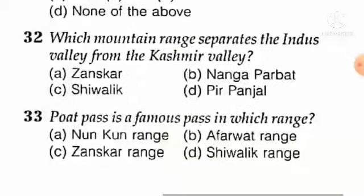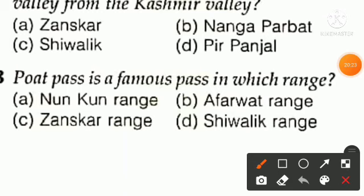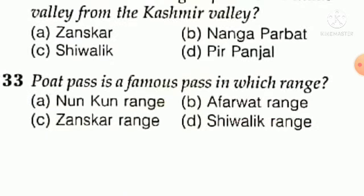Question number thirty-three — the last and important question: Port Pass is a famous pass in which range? It is considered to be in UT of Ladakh. Option A — Nunkun Range, option B — Aferwat Range, option C — Zanskar Range, option D — Shivalik Range. Option B and option D are not the answer. Is it Nunkun Range or Zanskar Range? Share your answer in the comment section. With this we conclude the session — hope you like it, share it, and subscribe to our channel. Thank you, bye.